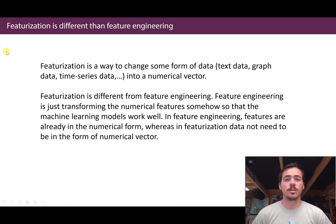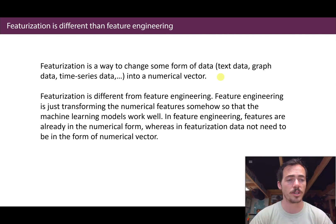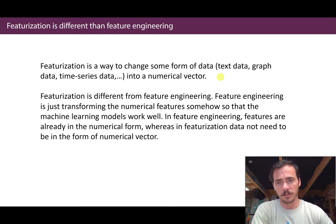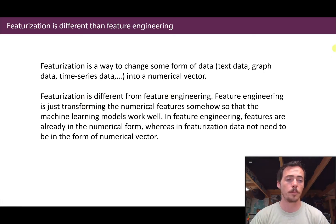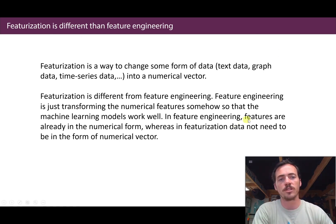A quick note on featurization versus feature engineering: featurization is a way to change the form of your data — maybe your input data is initially in the form of text, a graph, or time series data — and you have to transform that into a numerical vector for your machine learning model. In our very next video we'll talk about how you go from a chemical formula to a numerical array that can be used for the model. Feature engineering is different — it's anything where you're transforming numerical features in a way that helps the model work better, such as introducing new features based on domain knowledge. In featurization you're turning data into numerical form; in feature engineering, the features are already in numerical form.